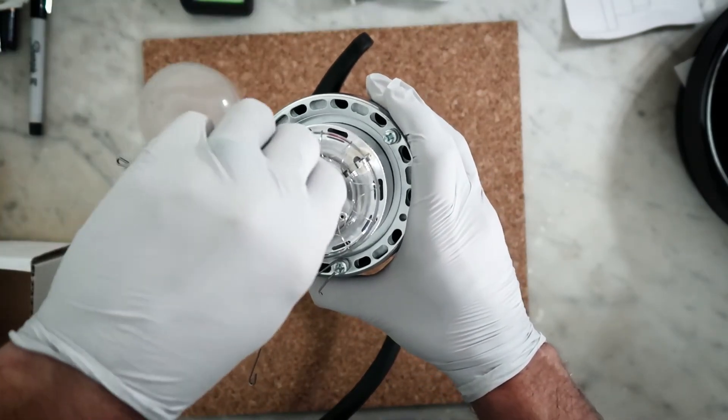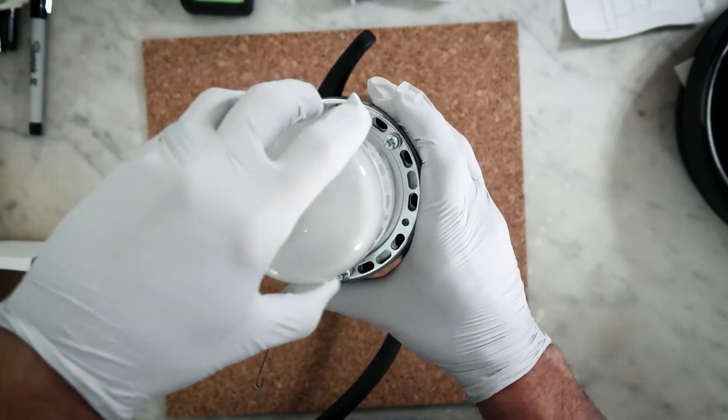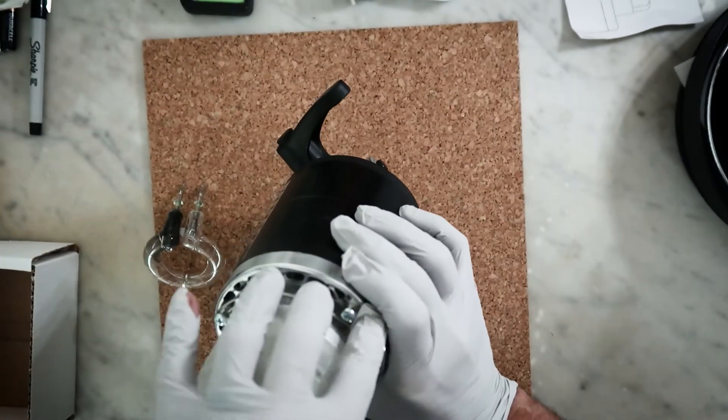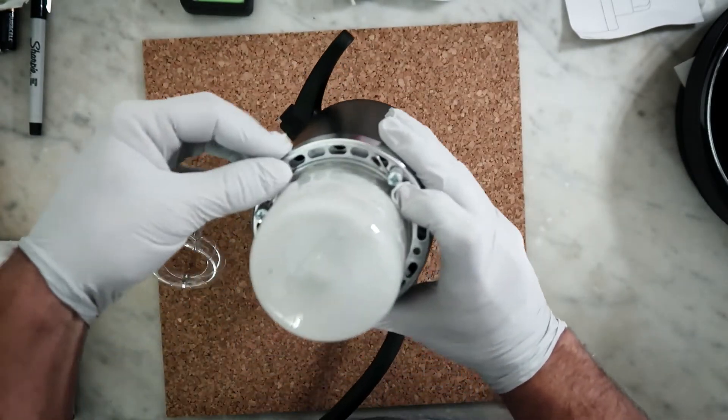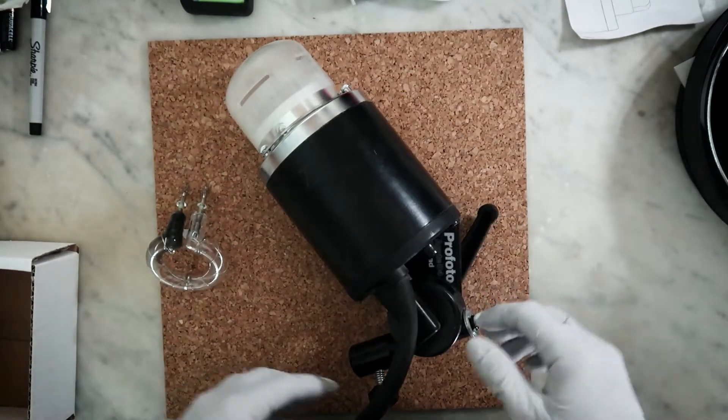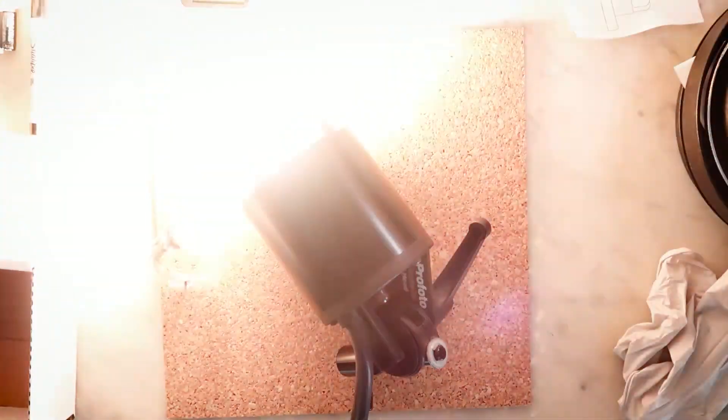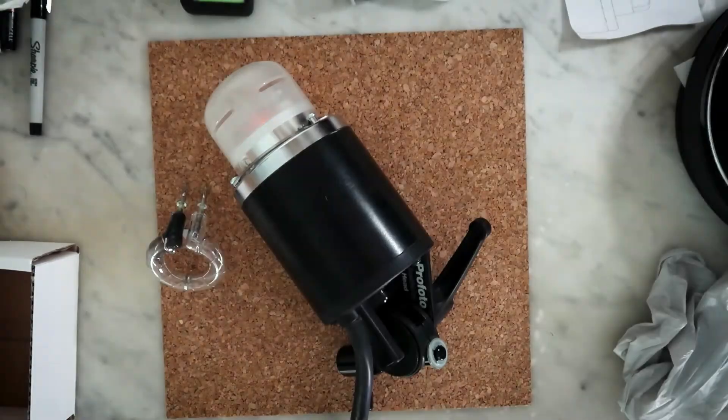Grab that glass cover, put it back on. Make sure your glass dome is secure. Now you can plug in your light, test it, test the modeling lamp. Make sure everything works and you're good to go. Let's get back to shooting.